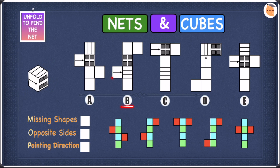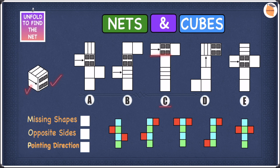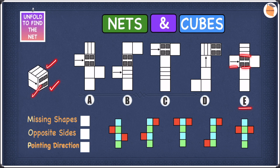In B we have the arrow, the window, and the stripy pattern, so B is also fine. In C we have the window, the arrow, and the stripy pattern. In D we have the stripy pattern, the arrow, and a window. In E we once again have all three shapes. So we cannot use missing shapes to eliminate any of the options — let's cross off missing shapes.